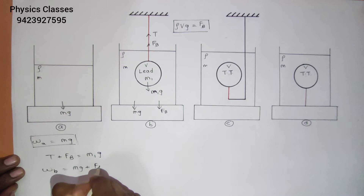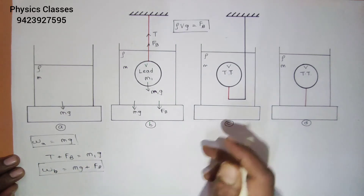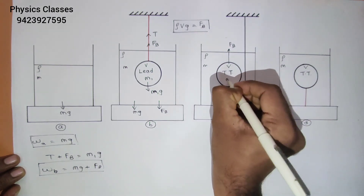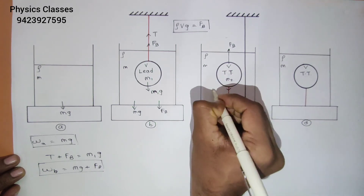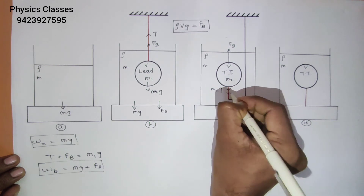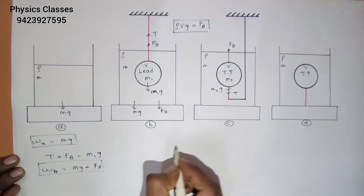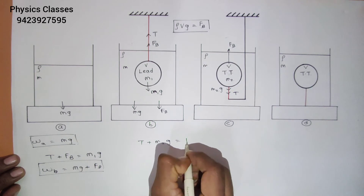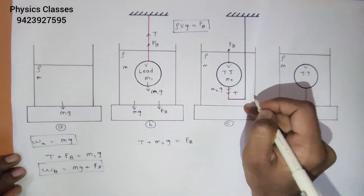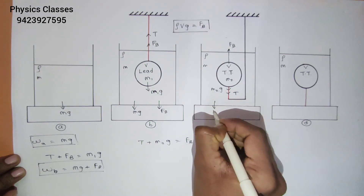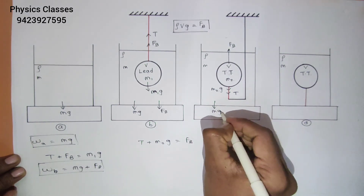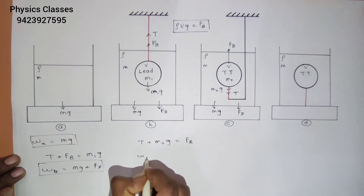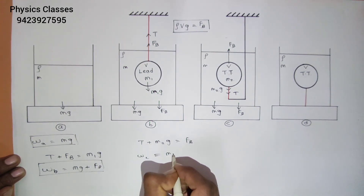In part C, the buoyant force in the upward direction is FB. Let M2 be the mass of the table tennis ball, so the gravitational force acting downward is M2g. The tension in the string pulls the ball in the downward direction with force T. As the table tennis ball is also in equilibrium: T + M2g = FB. The force on the weighing machine is Mg due to the water, and the reaction of FB acts downward. So WC = Mg + FB.